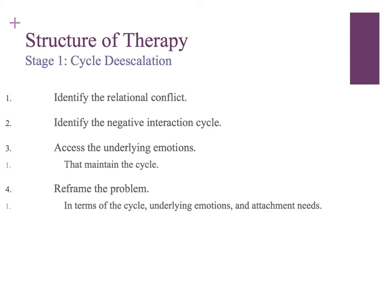In EFT you interrupt the cycle by changing the way partners express and respond to each other's emotions, which is different from other systemic models where you interrupt the cycle by changing behaviors. Similar to other theories, the end of the first stage is where the therapist reframes the problem — connecting the problem as each partner sees it to the interactive cycle and showing how both problems are related, that the couple is stuck together in a pattern they're both maintaining and can both take steps to change.